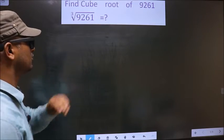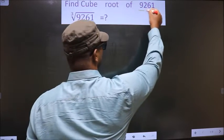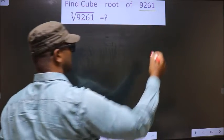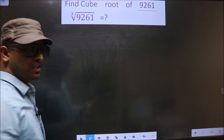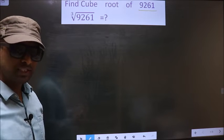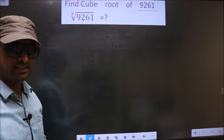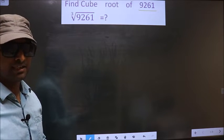Find the cube root of 9261. To find the cube root, first we should do the prime factorization of it.